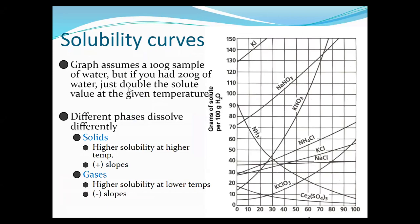This graph usually shows 100 grams of water on the y-axis, but keep in mind that if you had 200 grams of water, you would just double the solute value at a given temperature. For example, let's take a look at potassium chloride.